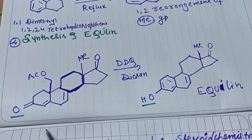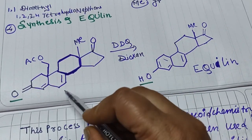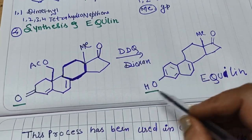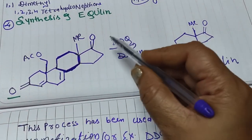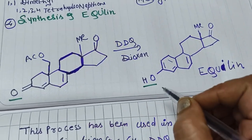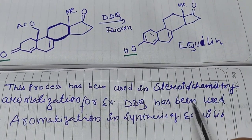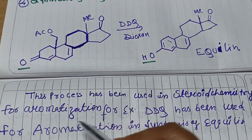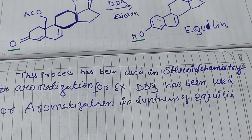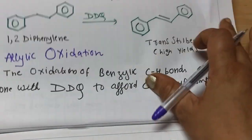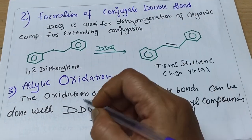DDQ can also be used to synthesize equiline, which is a natural product. You have to note the functional group change — the ketone group converts to an OH group in this reaction. This process has been used in steroid chemistry for aromatization. DDQ has been specifically used in the aromatization step in the synthesis of equiline.